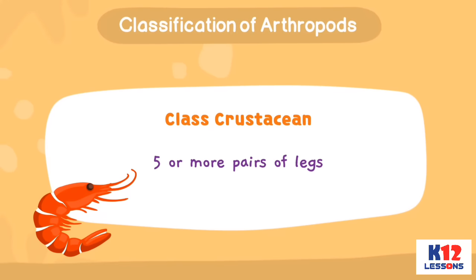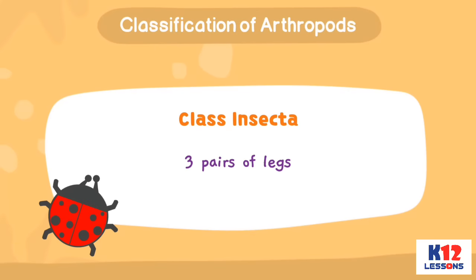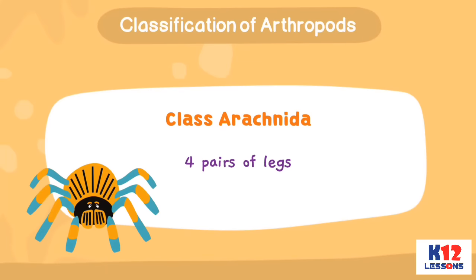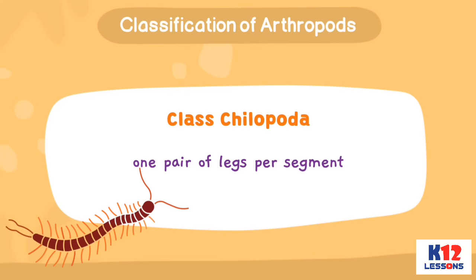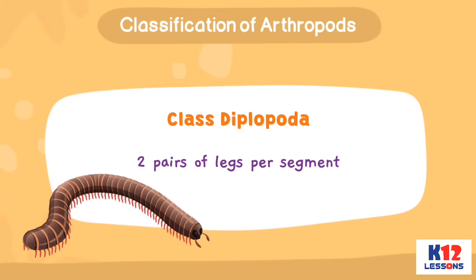Class Crustacean: five or more pairs of legs. Class Insecta: three pairs of legs. Class Arachnida: four pairs of legs. Class Chilopoda: one pair of legs per segment. Class Diplopoda: two pairs of legs per segment.